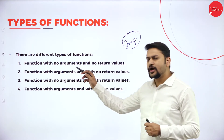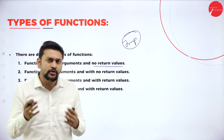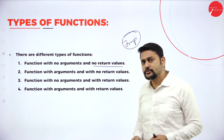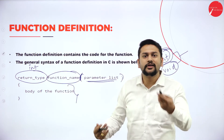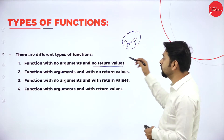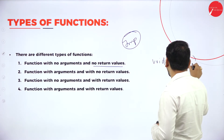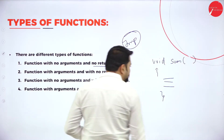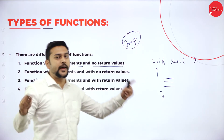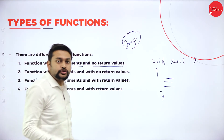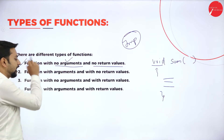Let's start with the first type: function with no arguments and no return values. If I write my return type as void, I don't return any values. So: void, function name is sum, parentheses are empty — no arguments. Do I have arguments here? No, I don't. Parentheses are empty, so I am satisfying 'no arguments.' My return type is void, so I am satisfying 'no return values.' This is the first type of function.